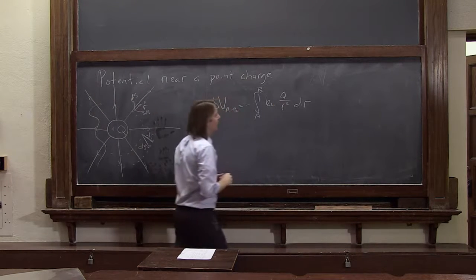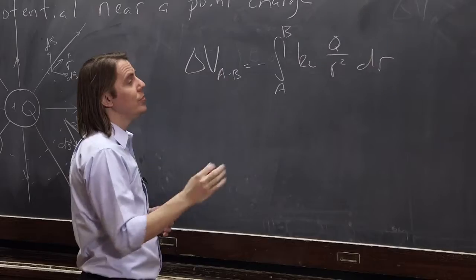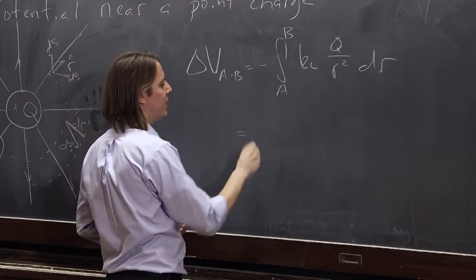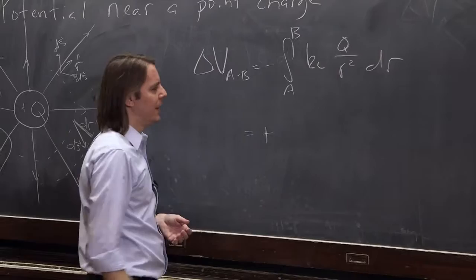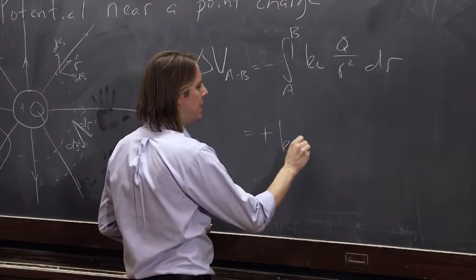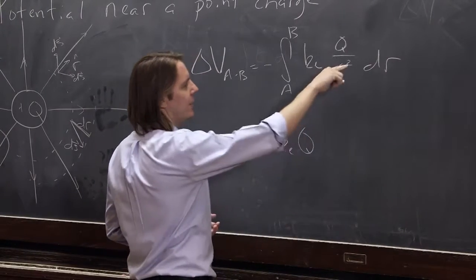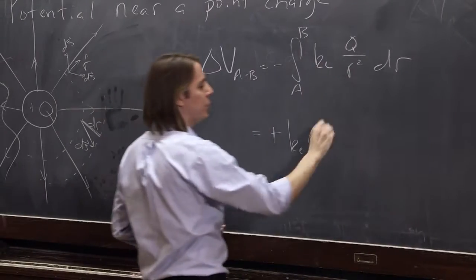So this is r to the minus 2, so you bring it to the minus 1, divide by the minus 1, which makes that go away. Okay, so it's positive keq, and then it goes to r to the minus 2, r to the minus 1, 1 over r.